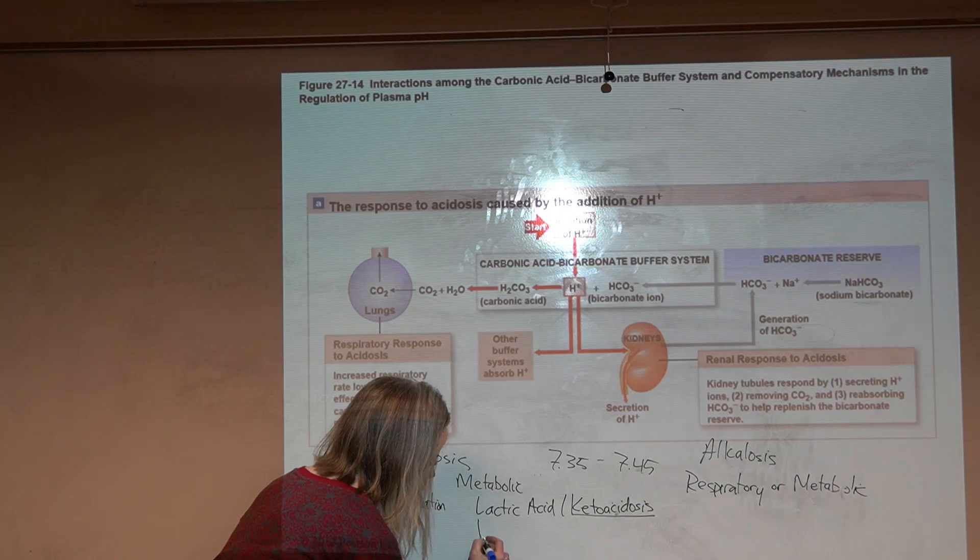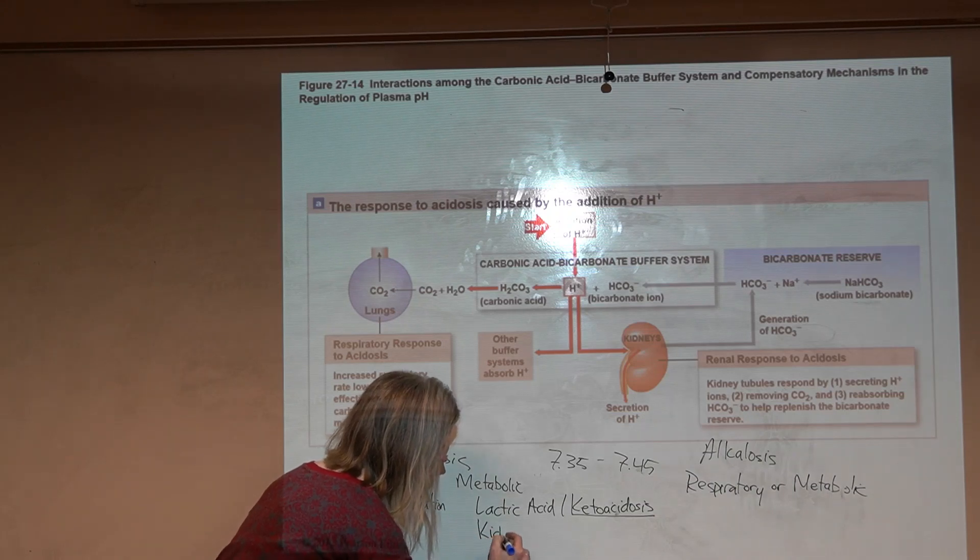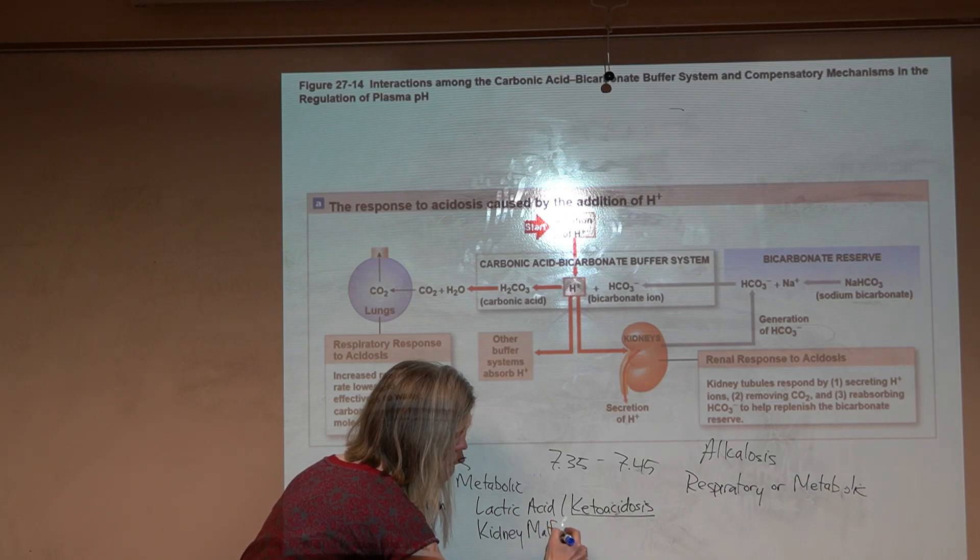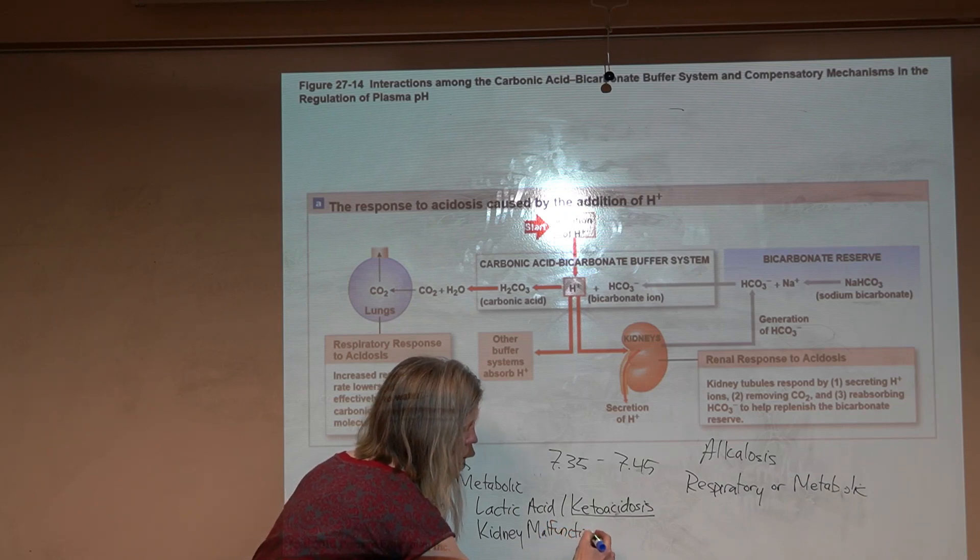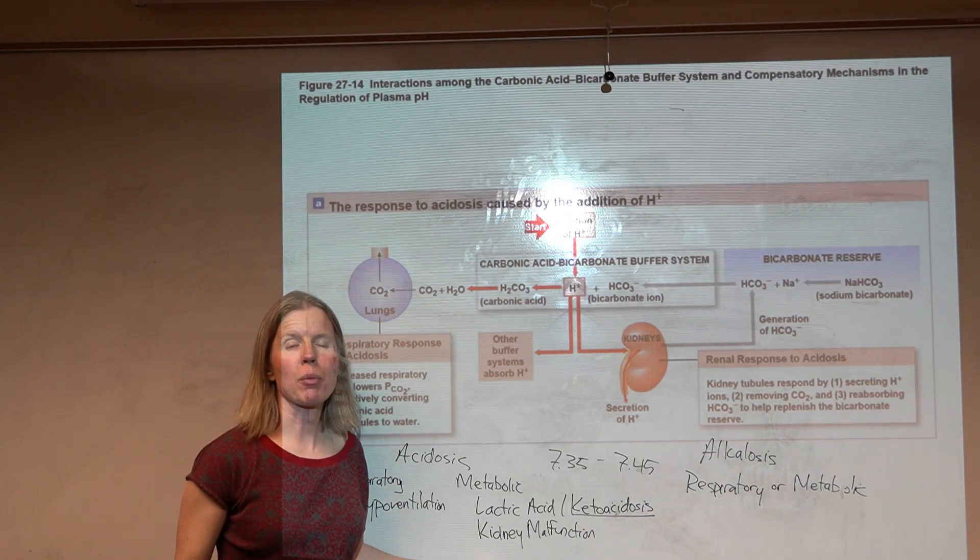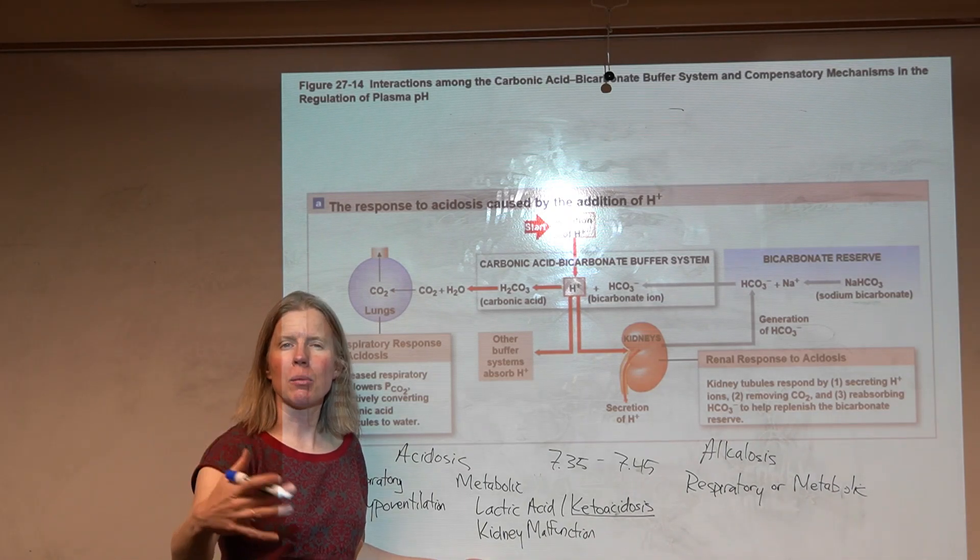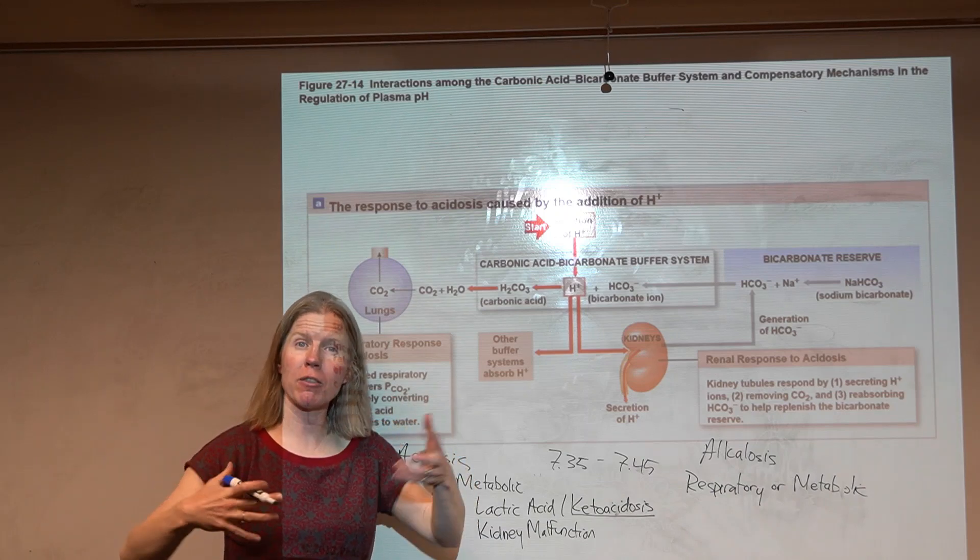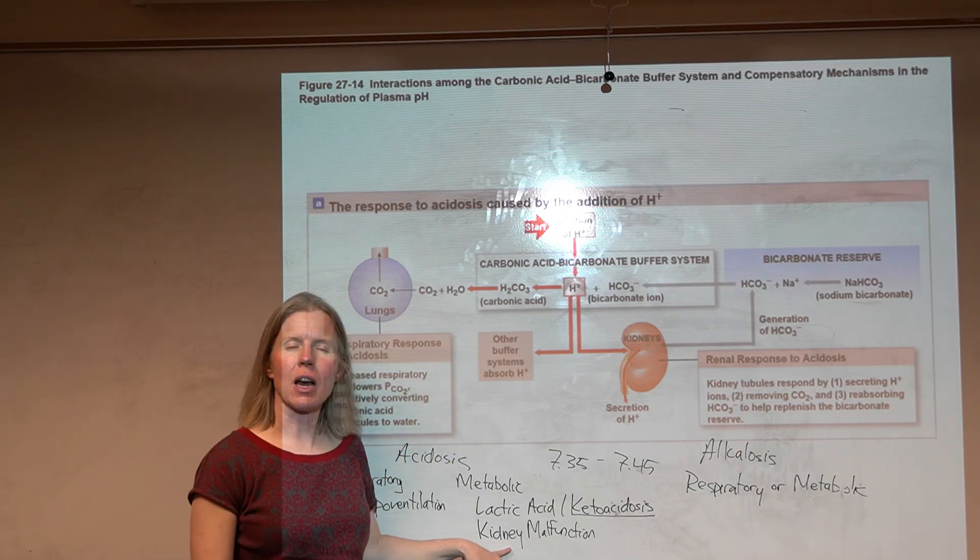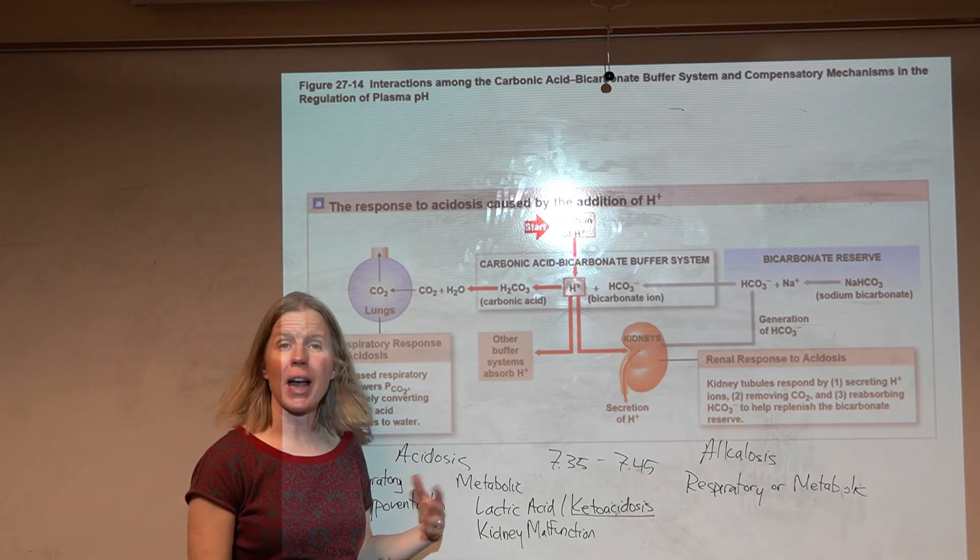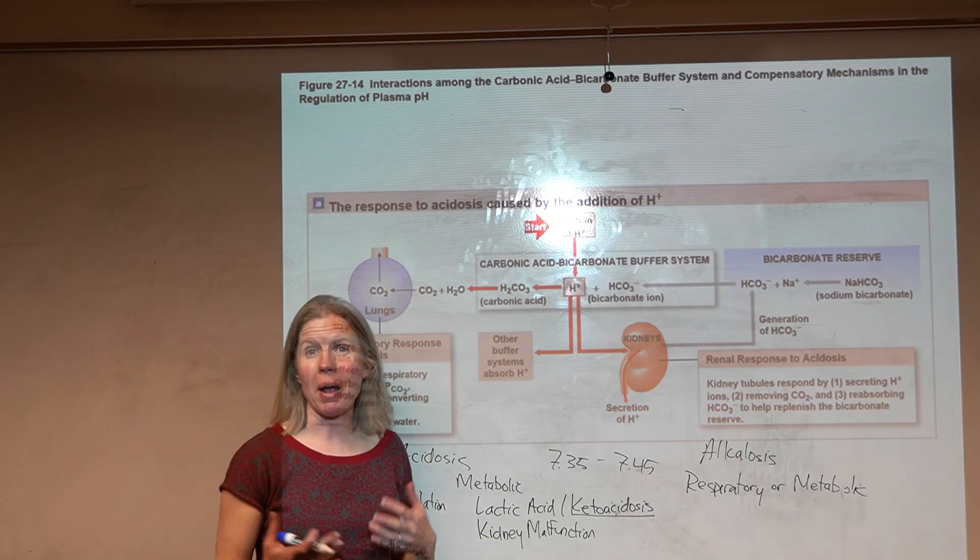Other ways to get metabolic acidosis would be something like if your kidney isn't working properly, like glomerulonephritis. When you blow out that filtration membrane, that can prevent us from actually adjusting our acids and bases as we should.